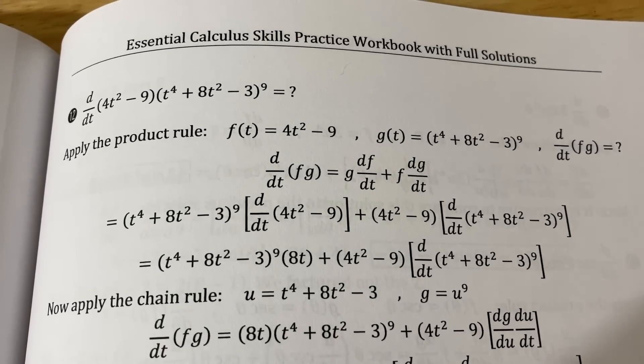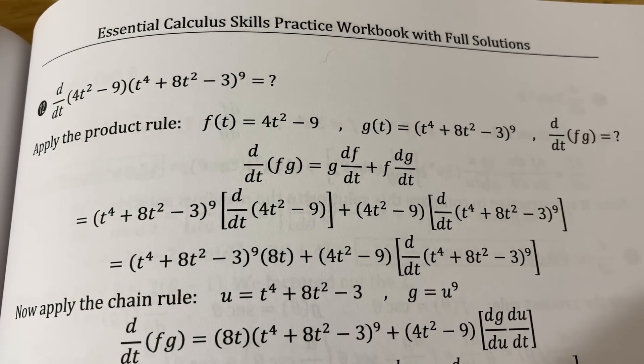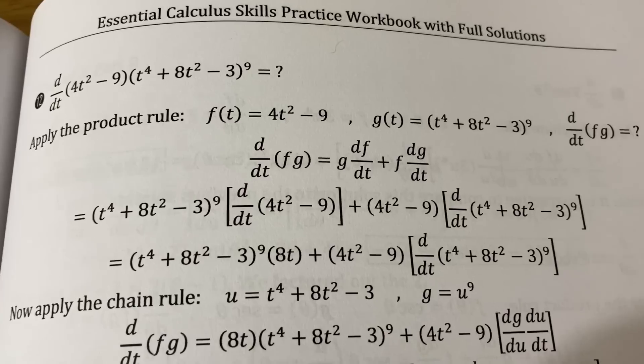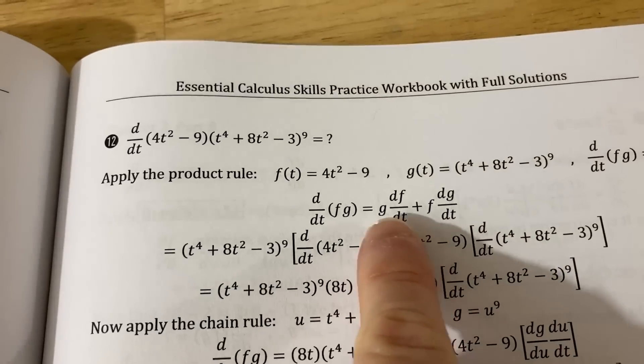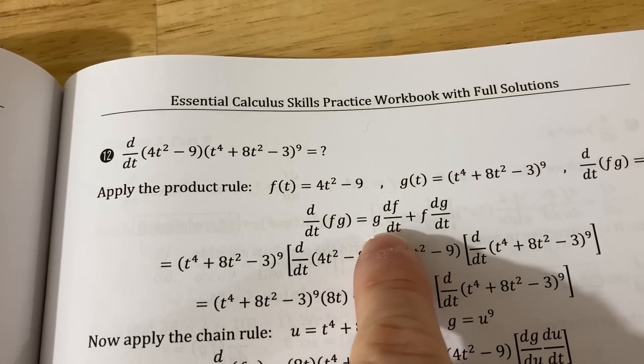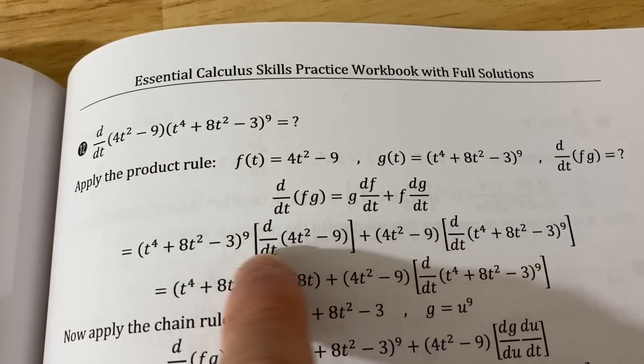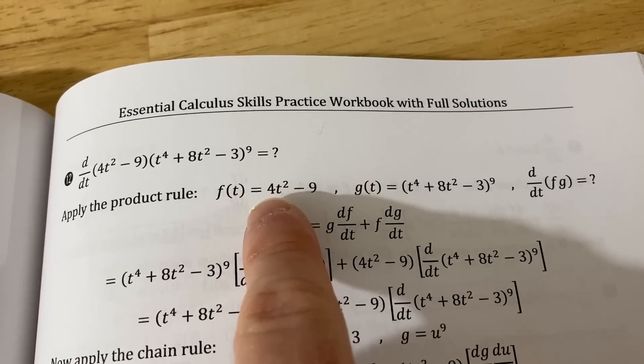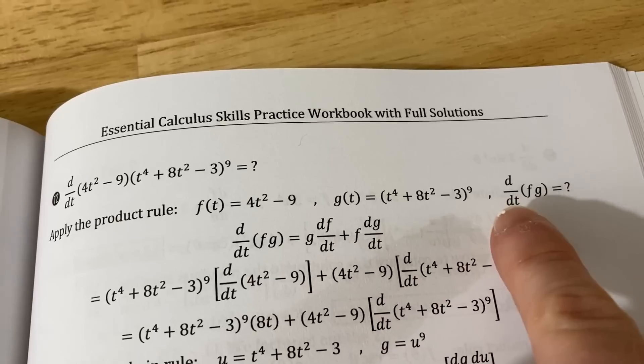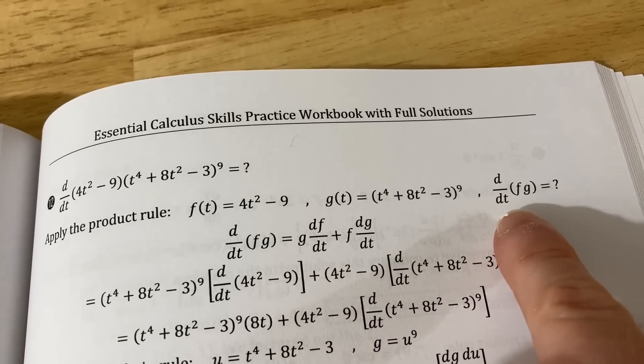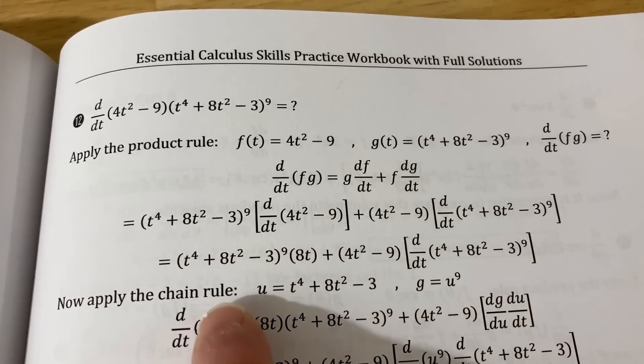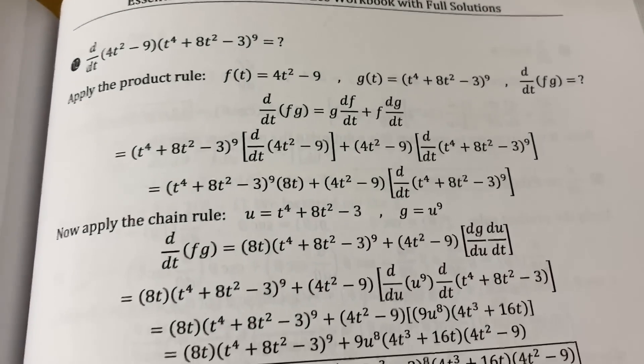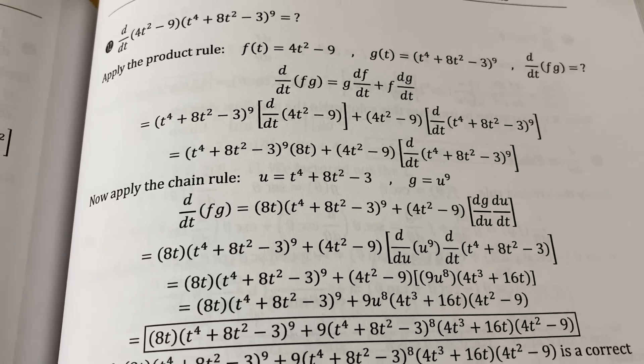Here's a random example of the product rule in the solutions. Honestly, I don't see how anyone on earth could explain this any better. Again, the way I do the product rule is a little bit differently - I would put the df/dt before the g. But look at this. He specifies the f, he specifies the g, and he says the question is to find the derivative of the product. He goes through and shows every single step. Even here: now apply the chain rule. So everything is here and it's explicitly stated.